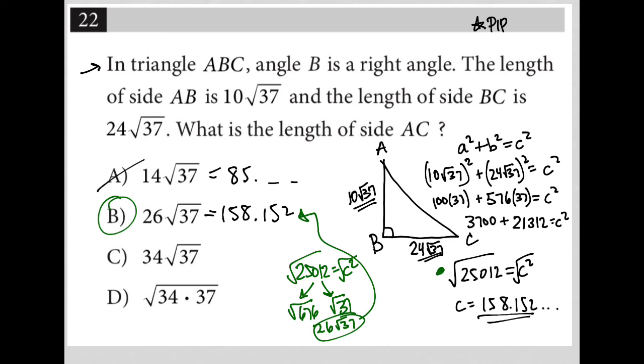So two different paths, the decimal path and the simplification, the radical simplification path. Either way, we get the answer as choice B here.